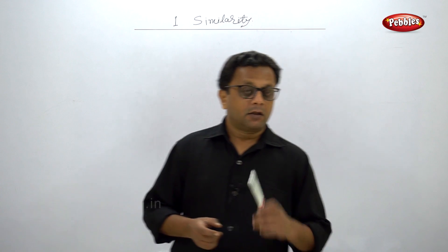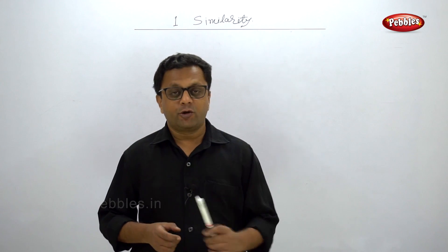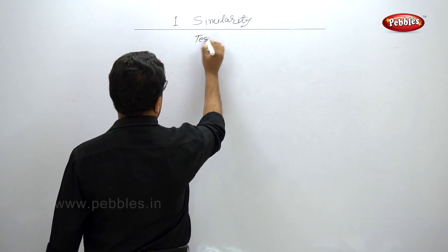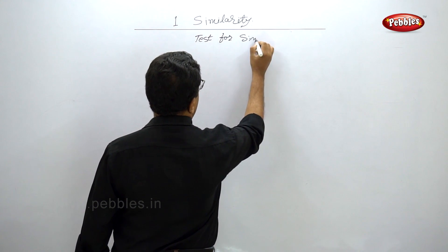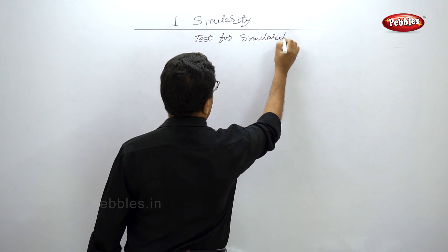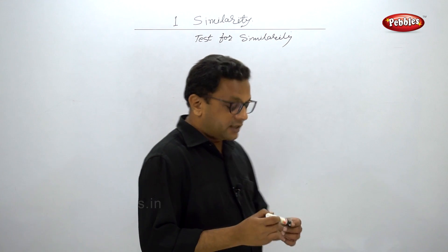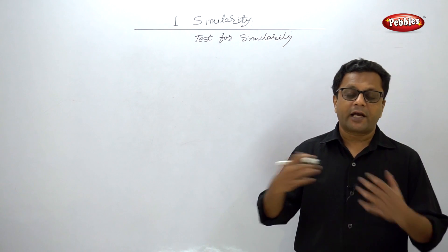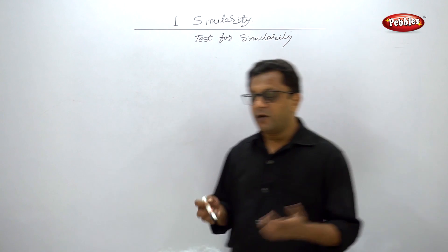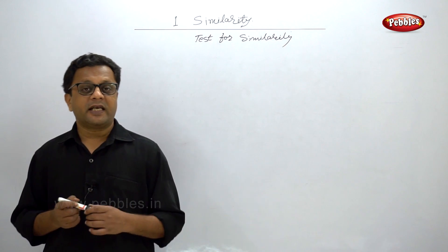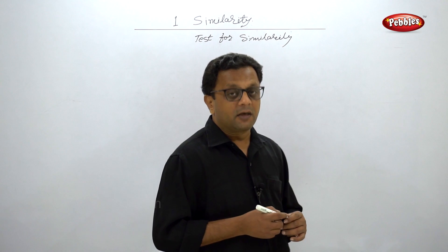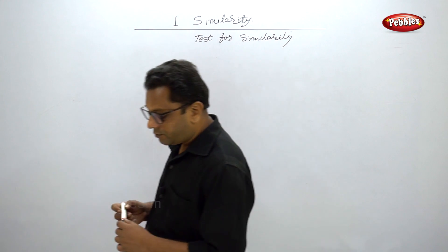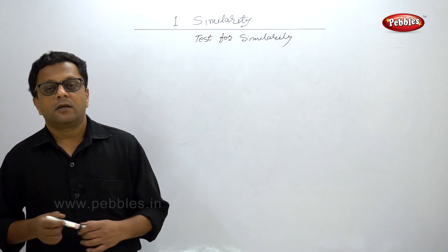Hello friends, welcome back. In this topic we are going to deal with similarity and we are going to see the tests for similarity. When two triangles are there, there are three tests by which we can say that these two triangles are similar: the first is the AA test of similarity, the second is the SAS test of similarity, and the third is the SSS test of similarity. Let us see one by one what these tests mean.